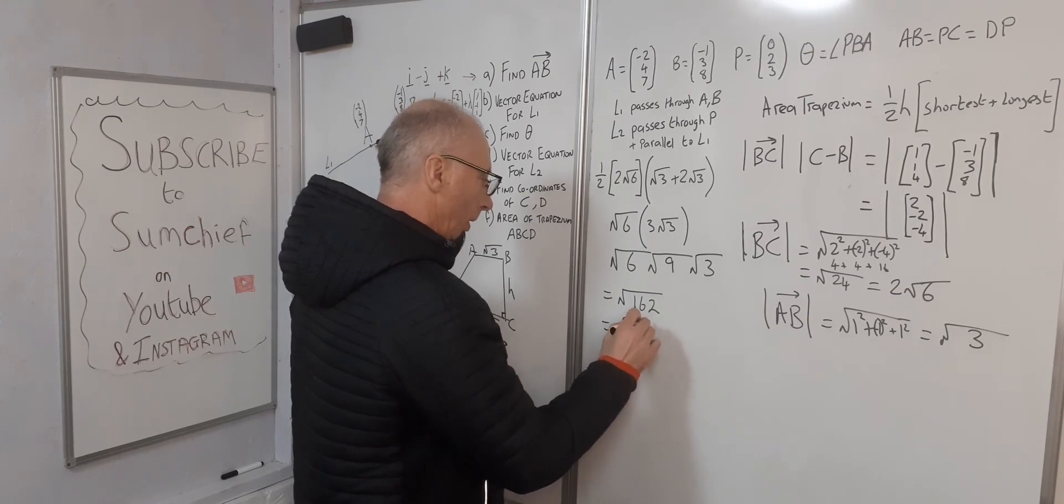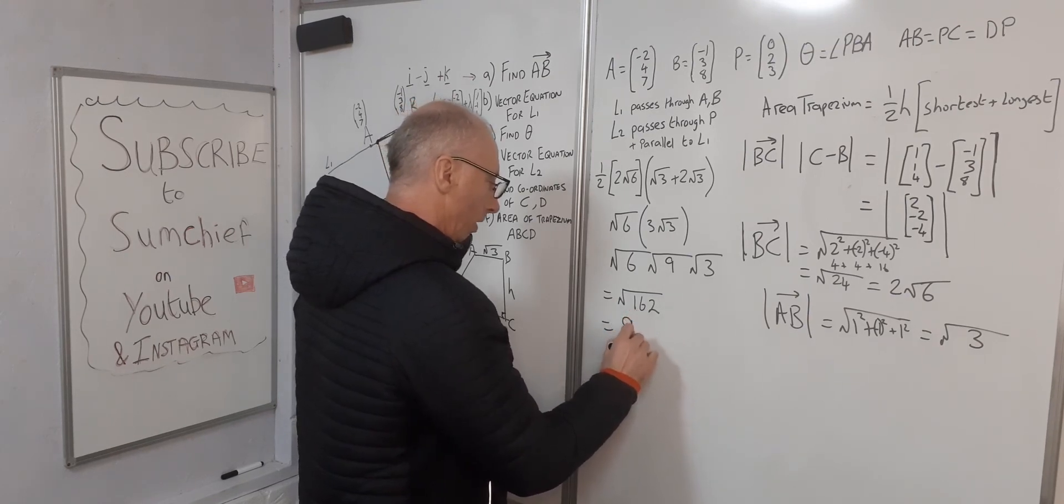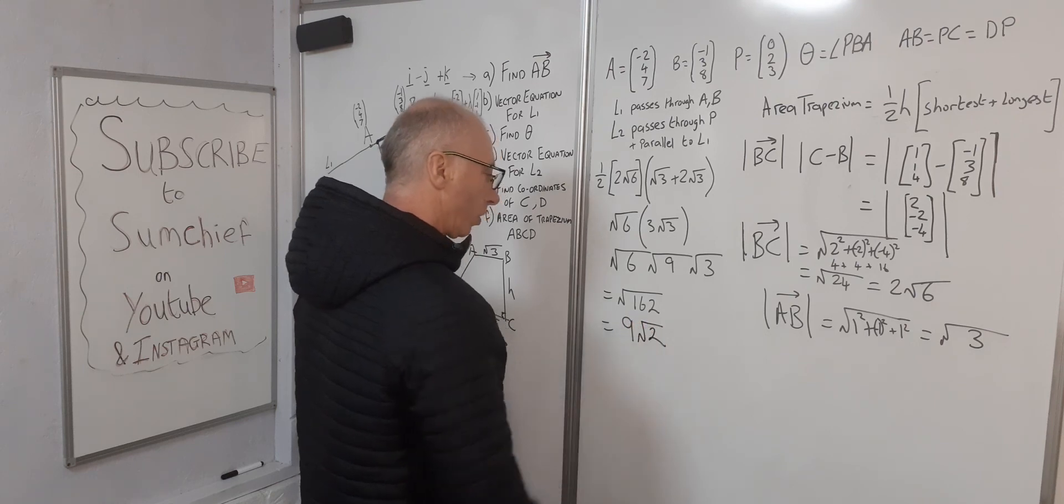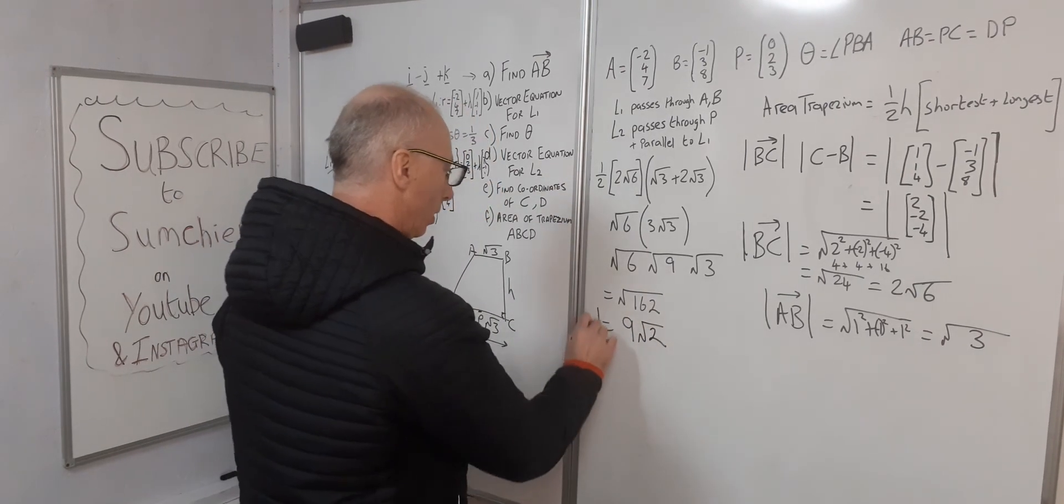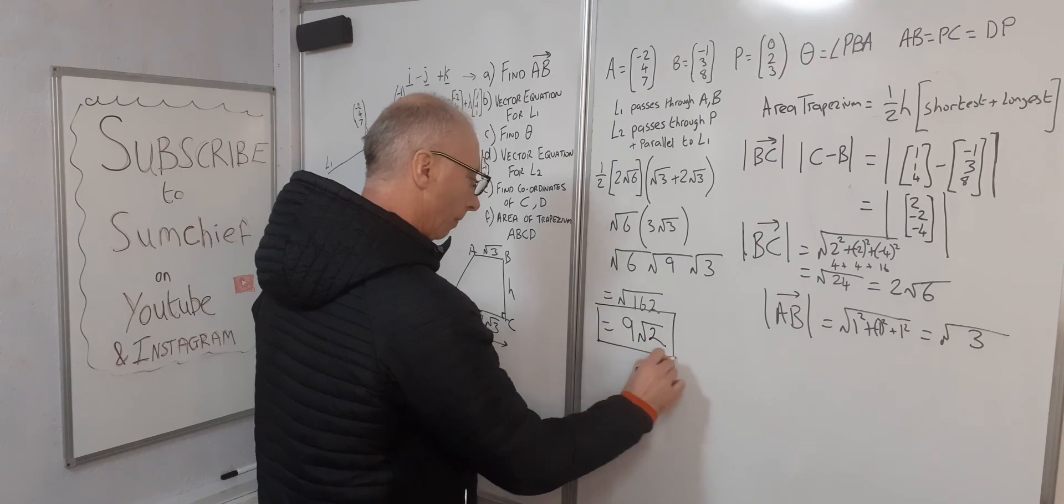So 18 equals 9 times 2, so we've got 9√2. 9√2 is the area of our trapezium. Thanks for watching.